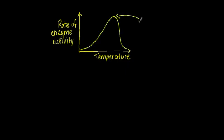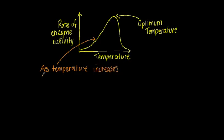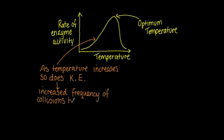Now you need to be able to recognize the graph of the effect of temperature on enzymes. It looks like this, with the peak being the optimum temperature. To explain up to the peak, as the temperature increases, so does the kinetic energy of the enzymes and the substrates, resulting in an increased frequency of collision between the two, thus increasing the rate of reaction.